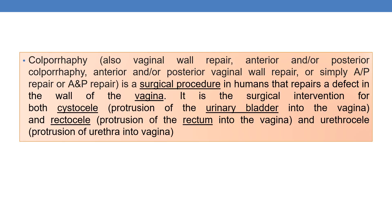First of all, what is colporrhaphy? 'Rrhaphy' means surgical repair, and 'colpo' means vaginal — so colporrhaphy is the surgical repair of the vagina. It is also called vaginal wall repair: anterior colporrhaphy, posterior colporrhaphy, or anterior and posterior colporrhaphy (A&P repair). It is a surgical procedure that repairs a defect in the walls of the vagina and is the surgical intervention for cystocele (protrusion of the urinary bladder into the vagina), rectocele (protrusion of the rectum into the vagina), and urethrocele (protrusion of the urethra into the vagina).